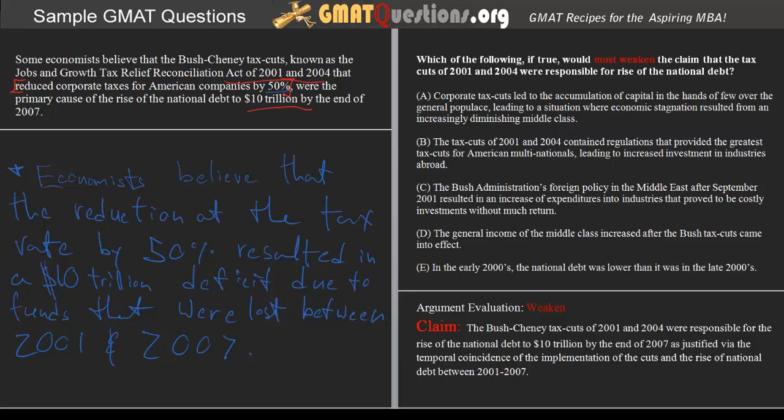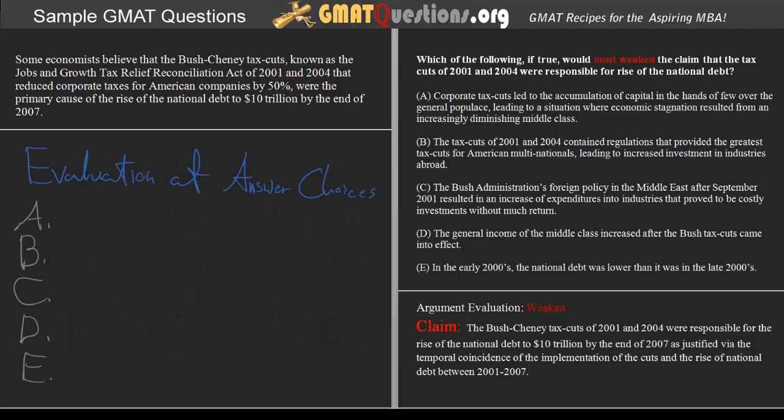So what we're looking for is an answer choice that would weaken the link between the rise of the national debt and the implementation of the tax cuts based on their occurring simultaneously. What we have to weaken is the idea that the tax cuts are linked to the rise of the national debt based on a temporal coincidence — their occurring simultaneously. If we can weaken that point, then we weaken the claim that the tax cuts are responsible. Let's go ahead and evaluate each of the answer choices, starting with A.